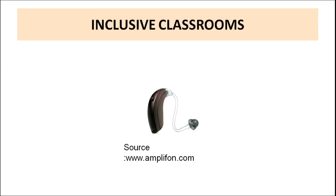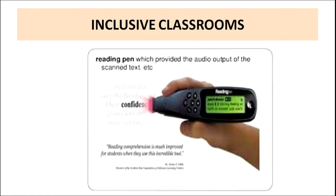A hearing aid should be available for a child with hearing impairment so that the child can hear effectively. Apart from the hearing aid, it is also important that the child sits in the front so they can listen to the teacher without difficulty. Another important device is the reading pen, which provides the audio input of scanned text — you scan a textbook with the pen and it gives out the audio input.